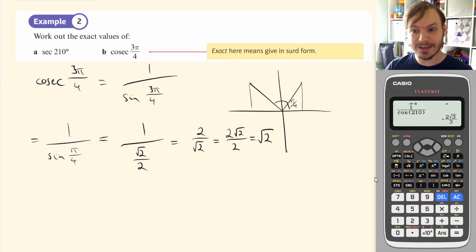And again, far, far quicker would be to just tap that in the calculator. 1 over sine of 3 pi over 4. And then, oh, it's the wrong answer because my calculator is in degrees, not radians. So don't forget to change your mode to the correct one, press equals again, and it's root 2.